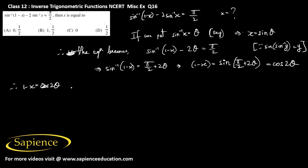Now cos 2 theta can be written as 1 minus 2 sine squared theta. Therefore 1 minus x equals 1 minus 2 sine squared theta, and since sine theta equals x, we substitute that in.